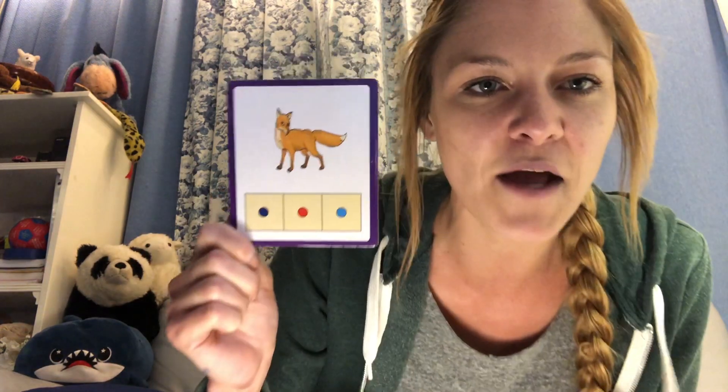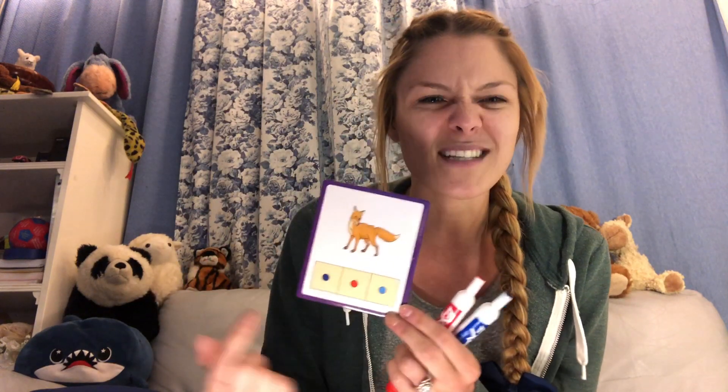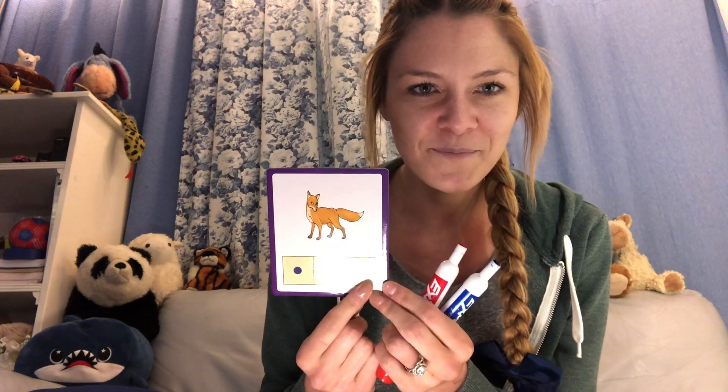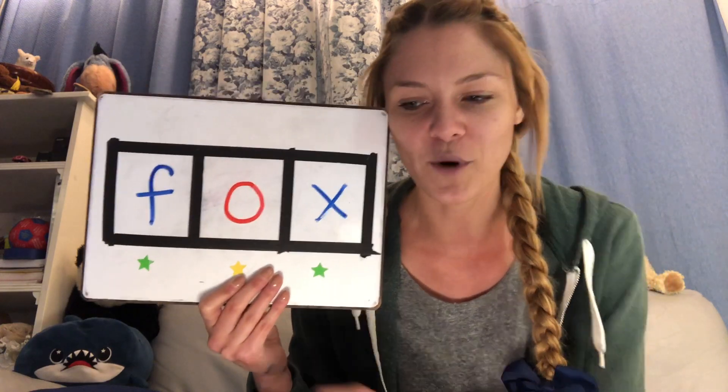This is a fox — the animal. So we say the word first: fox. Now let's segment or separate those sounds. F-O-X. It's only three sounds, three letters. Think about what those letters could be and try to write them down. Did you get F-O-X? That's the spelling of the word fox.